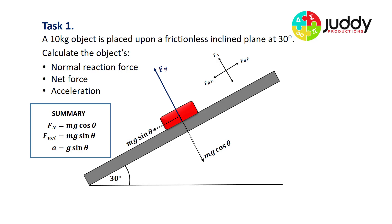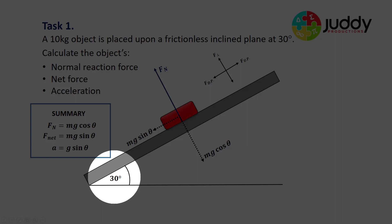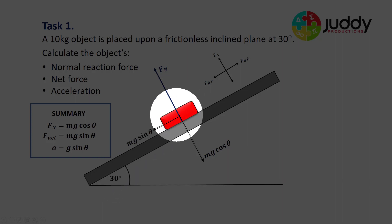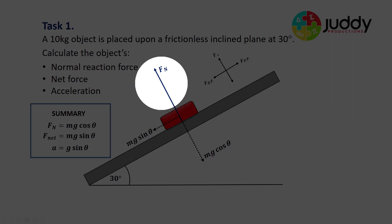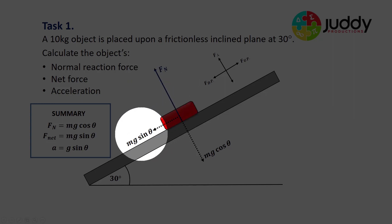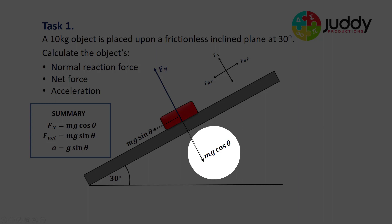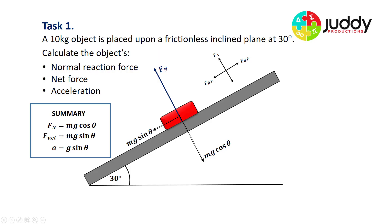Task number one: a 10 kg object is placed on a frictionless inclined plane at 30 degrees. We can see the object on the plane with the normal reaction force, a component of the weight Mg sin theta going down the plane, and a component Mg cos theta operating perpendicular to the plane opposite the normal. We want to calculate the object's normal reaction force, the net force on the object, and the object's acceleration.